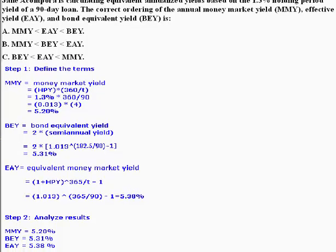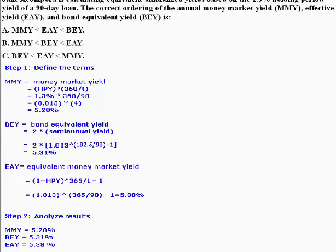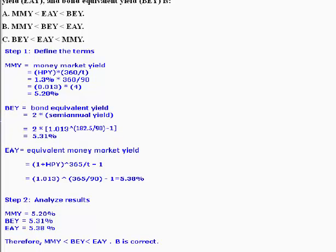Now we're ready to analyze our results. We found that MMY equals 5.20%, BEY equals 5.31%, and EAY equals 5.38%. It means that MMY is less than BEY, which is less than EAY, and therefore answer B is correct. We hope you found this helpful, and again, good luck on your CFA exam this coming Saturday.